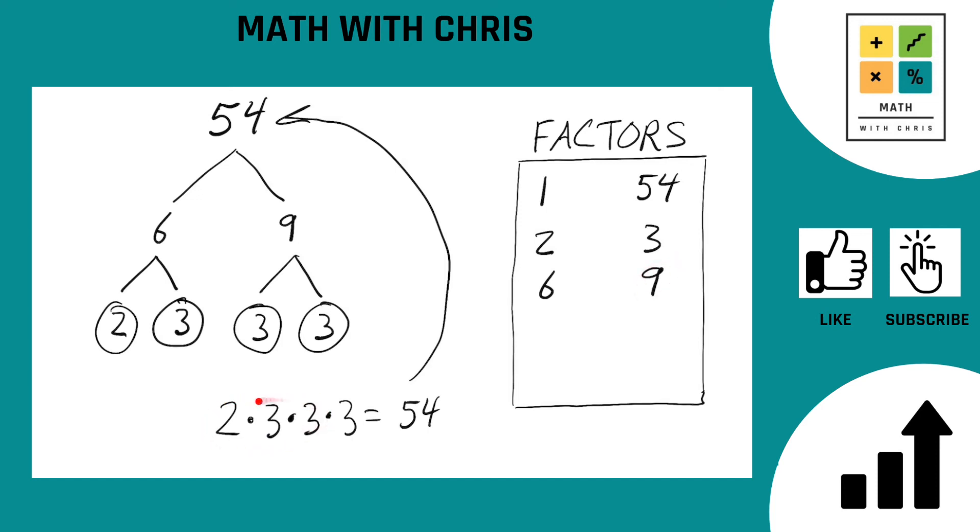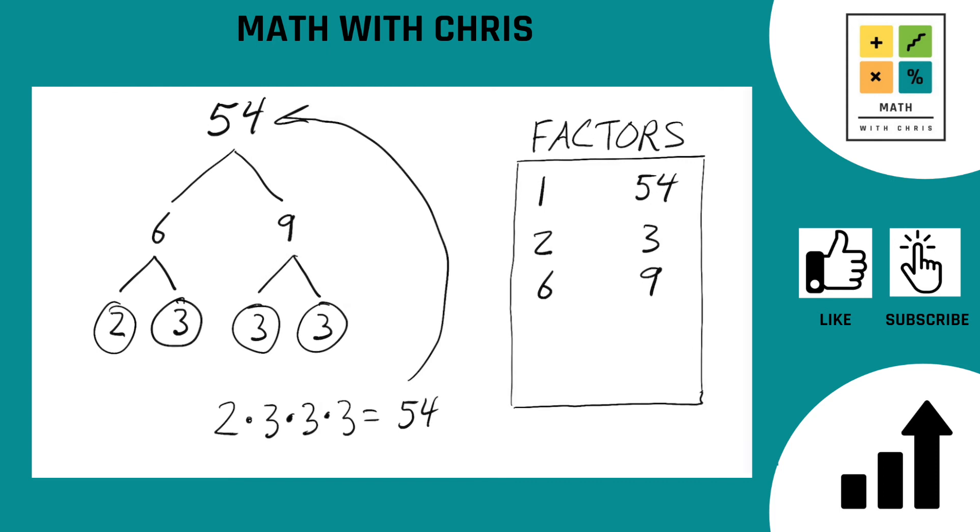What about 2 times 3 times 3? Well, 2 times 3 times 3 is 18. We don't have that yet, so let's bank in 18. And what about 3 times 3 times 3? 3 times 3 times 3 is 27. Now we do not have 27 yet, so put that in the factor bank. And that is every combination. There's nothing else to try. So we're done.